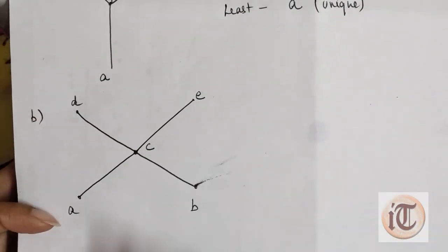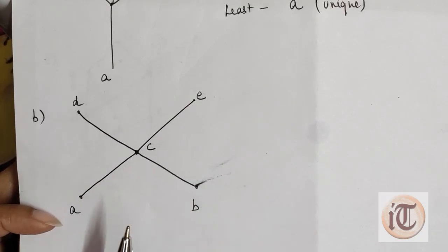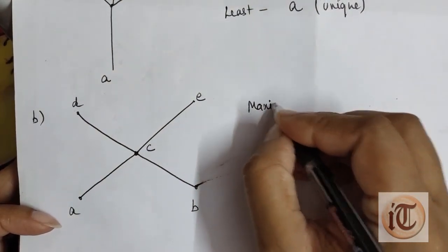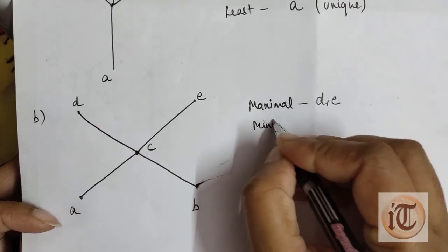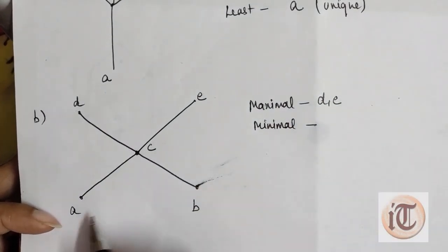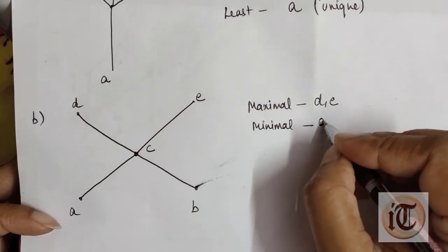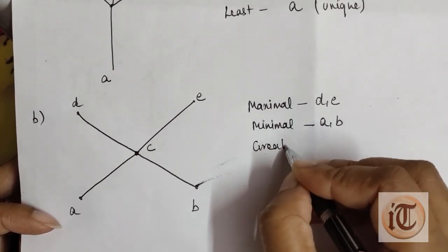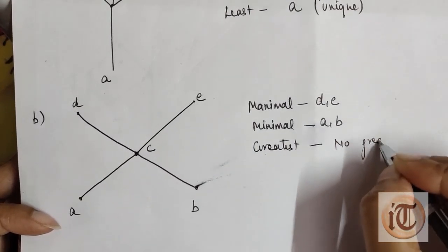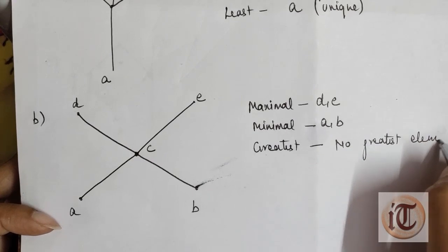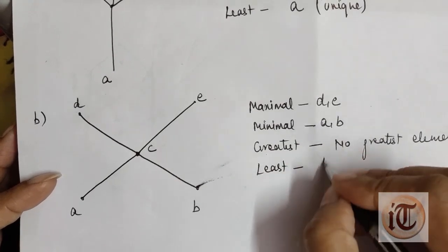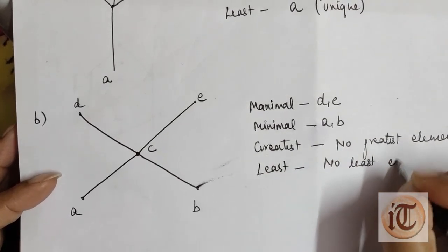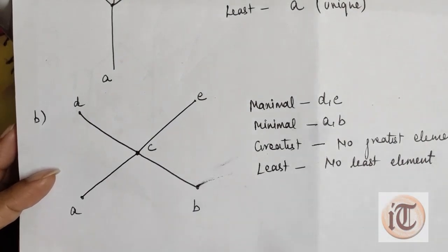We take another example. For this given Hasse diagram, the maximal elements are the top elements: d and e. The minimal elements are the bottom elements: a and b. For greatest, there is no greatest element because there is no unique element in the maximal case. For least, there is no least element because we have more than one minimal element, which is not unique.